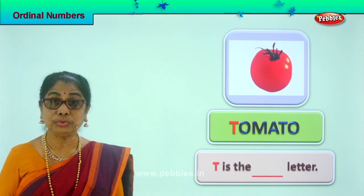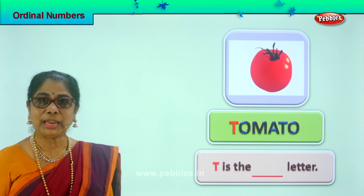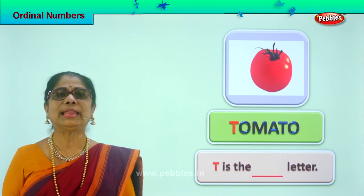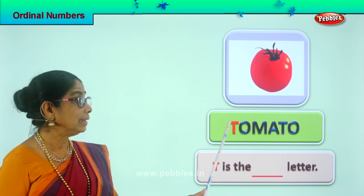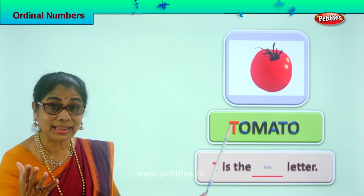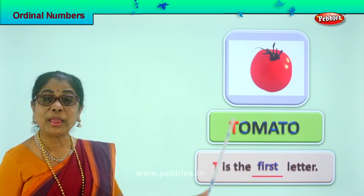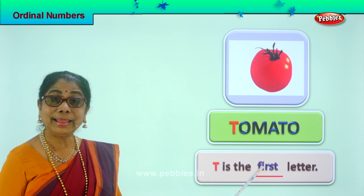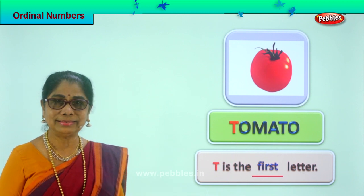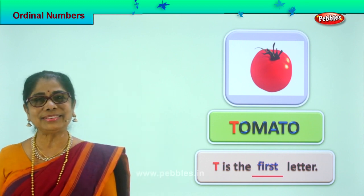You can also have the juice or sauce. Let's spell tomato: T-O-M-A-T-O. Which letter is colored? Letter T. What is the ordinal position? First letter — excellent! T is the first letter in tomato. Spell first: F-I-R-S-T. First. T is the first letter — read the sentence: T is the first letter.